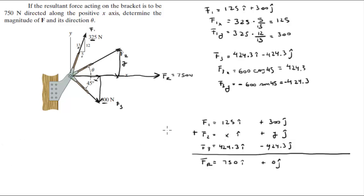What we got to do is solve for x and for y. So let's do the x first. You know that 125 plus x plus 424.3 is equal to 750. When you solve for x, this is equal to 200.7.